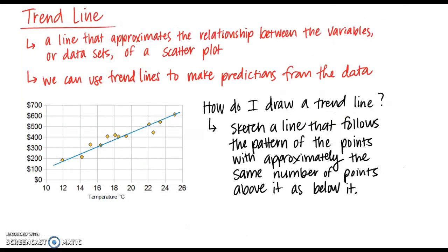We can use a trend line to model data and help us make predictions from that data. A trend line is a line that approximates the relationship between the variables or data sets of a scatter plot. We can use these trend lines to make predictions — for example, if we wanted to figure out the cost of electricity at 30 degrees Celsius, that temperature is not on the graph, but using the trend line equation we could determine that cost. When drawing a trend line, sketch a line that follows the pattern of the points with approximately the same number of points above it as below it — about 4 or 5 points above and below in this example.